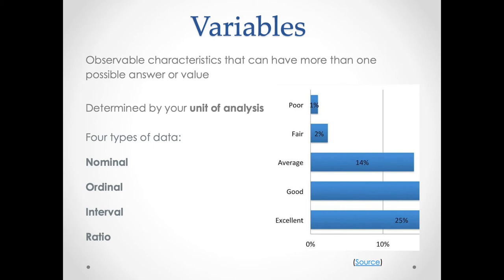Looking at our graph, I want to return to the critical thing about what a variable is. There's a challenge with this graph: we don't actually have many instances of 'poor' or 'fair' as answers — they only make up 3%. This shows a problem with our variable as we've constructed it, because there's not much variation. So when we evaluate this, we might say the question we asked wasn't the greatest.